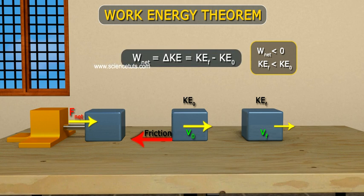Work done, W, is equal to the difference in kinetic energy, delta KE, which is equal to final kinetic energy minus initial kinetic energy.